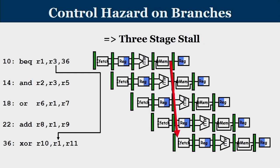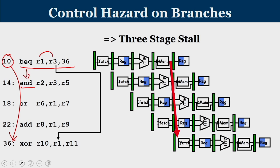As we have seen in our last lecture regarding control hazard, consider a case that we have an instruction: branch if equal to R1, R3, 36. The meaning is if the content of R1 and R3 are equal, then from line 10 you are supposed to jump to line number 36. If the contents are not equal, then execute the follow-through AND instruction. In a normal pipeline, the comparison of R1 and R3 happens in the ALU, and only at the end of the MEM stage will you be able to decide whether control should transfer to 36 or to 14. By the time you know the outcome of the branch, already 3 instructions have entered the pipeline.